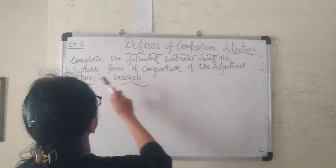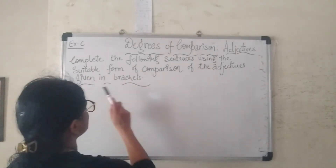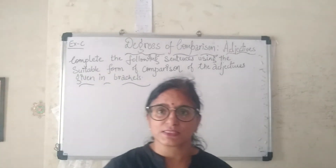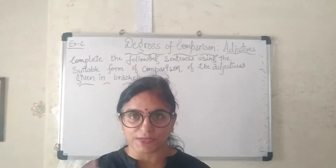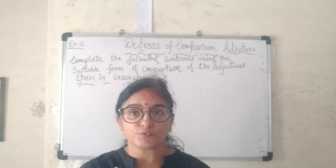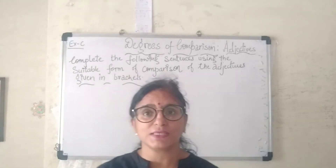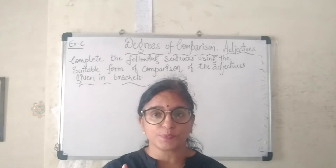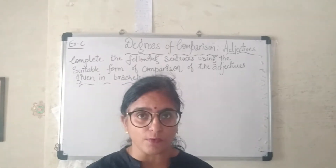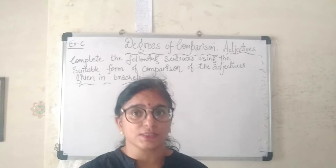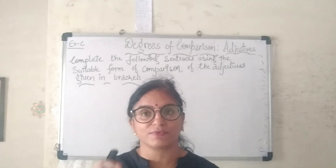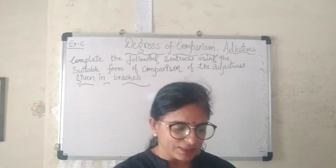Exercise C: complete the following sentences using the suitable form of comparison of the adjectives given in brackets. You have ten sentences. Read the sentence — if 'than' is written, it means comparison is between two things, so use the comparative form. If 'the' appears before the blank, put the adjective into the superlative form.